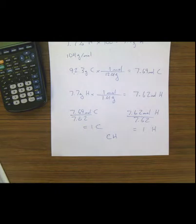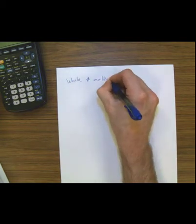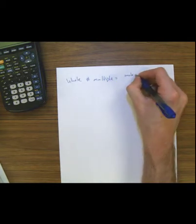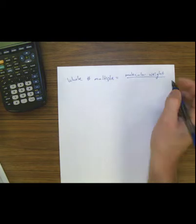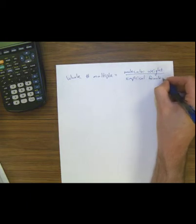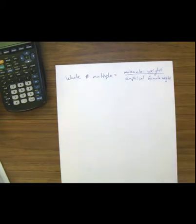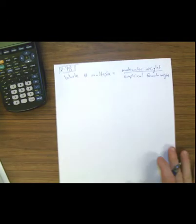To figure out the molecular formula, there's a formula in your textbook. The whole number multiple equals the molecular weight — essentially molar mass — divided by the empirical formula weight. If you forget which to divide by, always do the big number divided by the small. This comes from page 98 of the textbook.